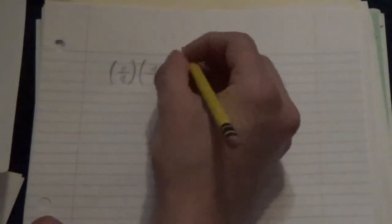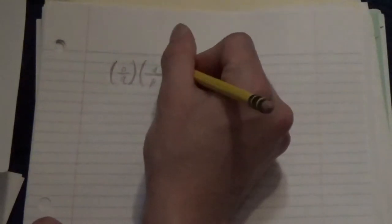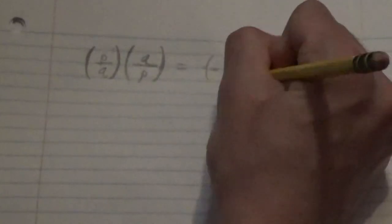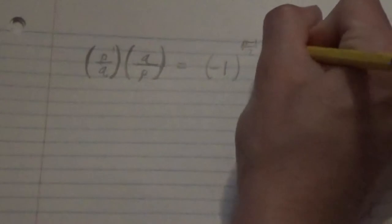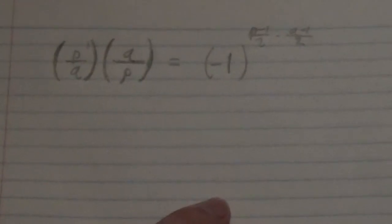is p a quadratic residue modulo q, multiplied by, going the other way, q over p, the determination of whether q is a quadratic residue modulo p, is equal to, as proven by Gauss, negative 1 to the quantity p minus 1 over 2 times q minus 1 divided by 2. And so this is the law. Don't violate it.